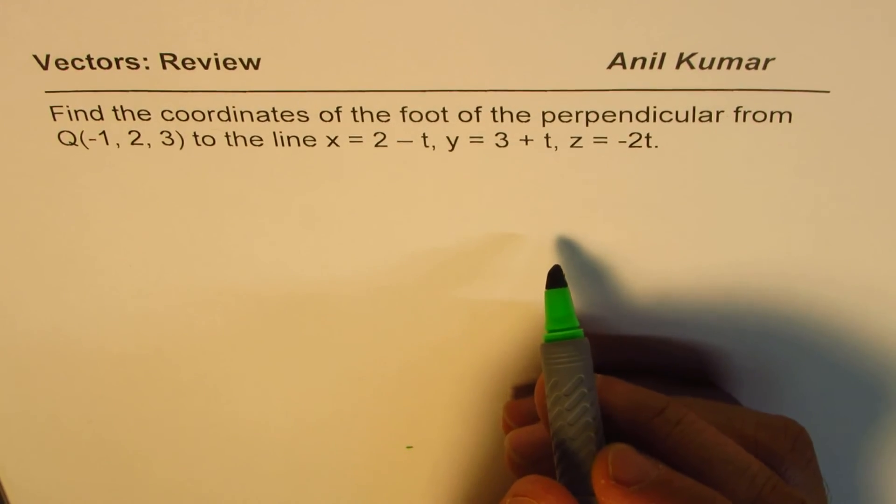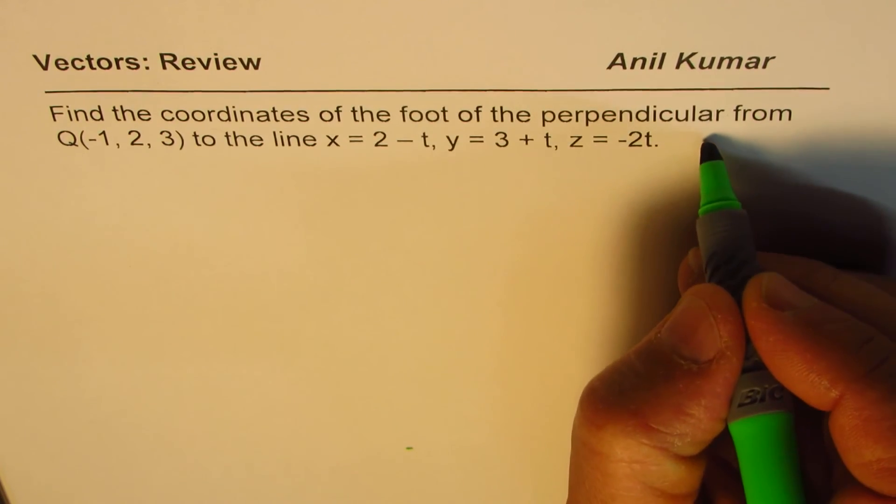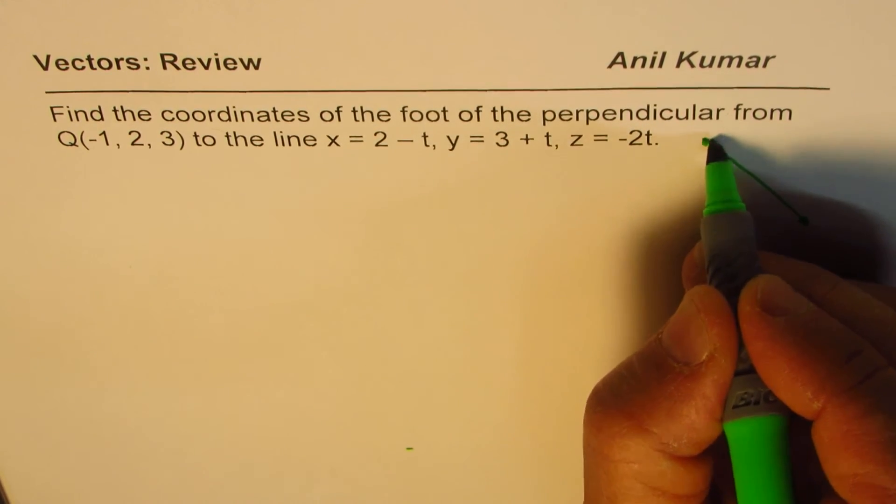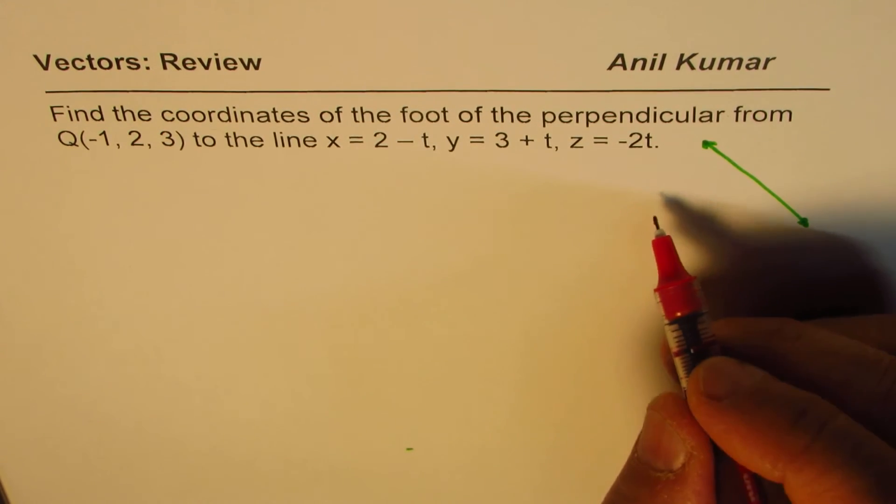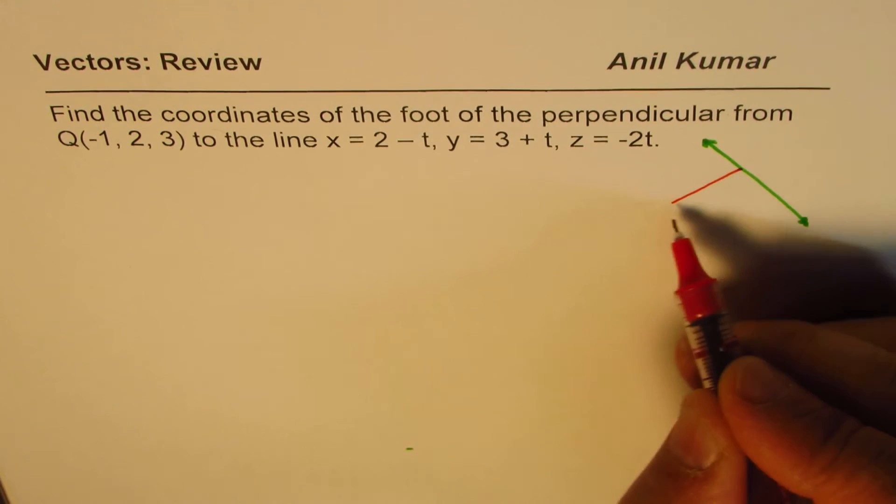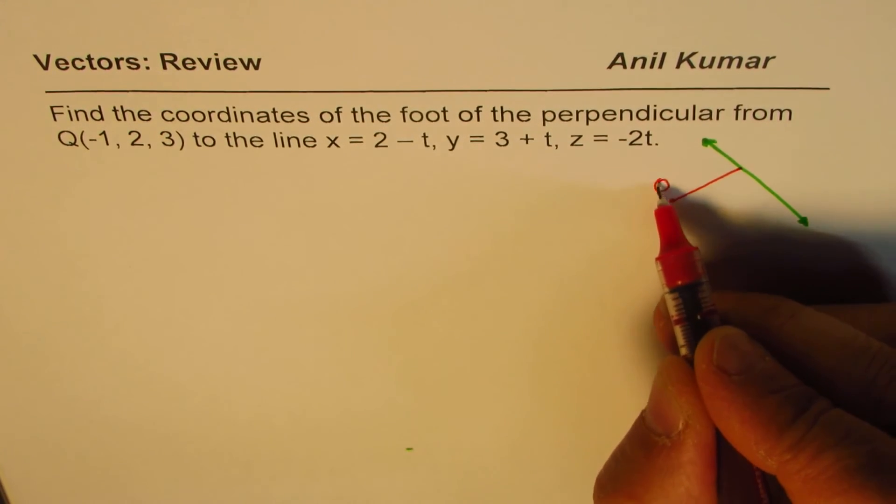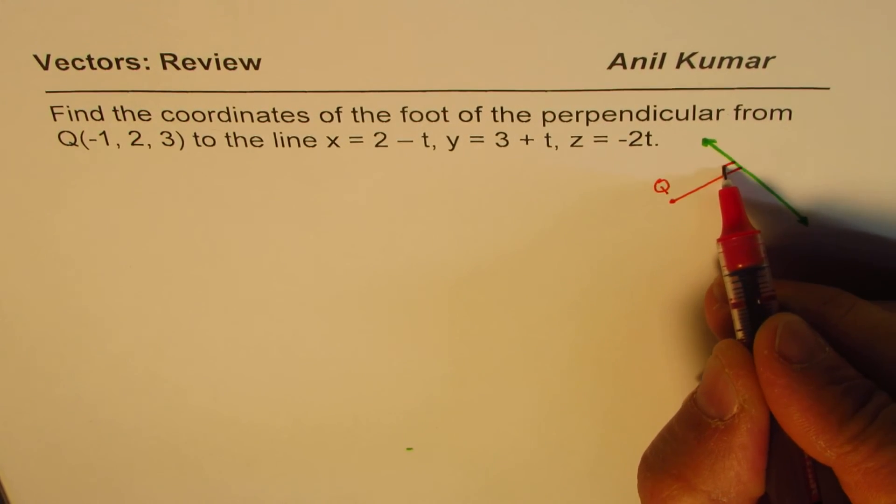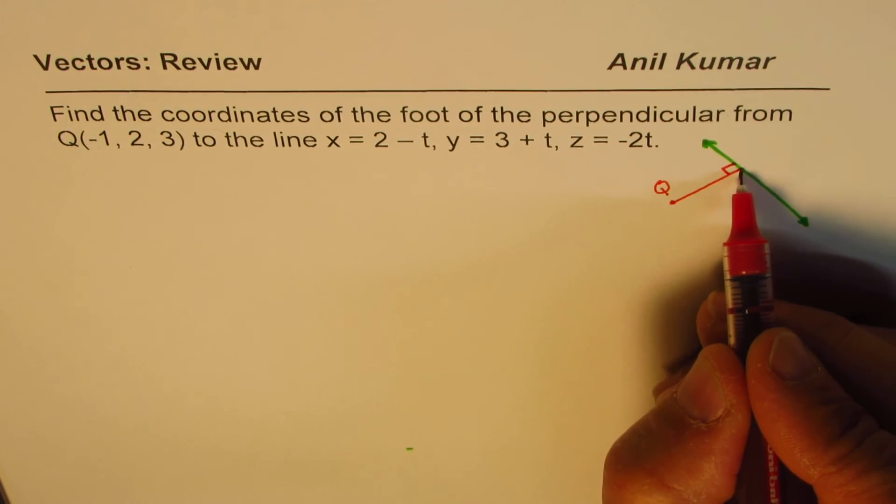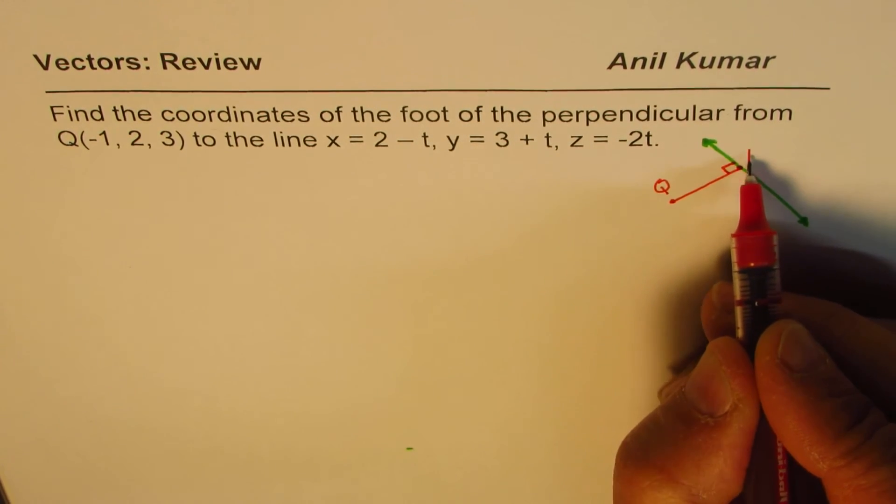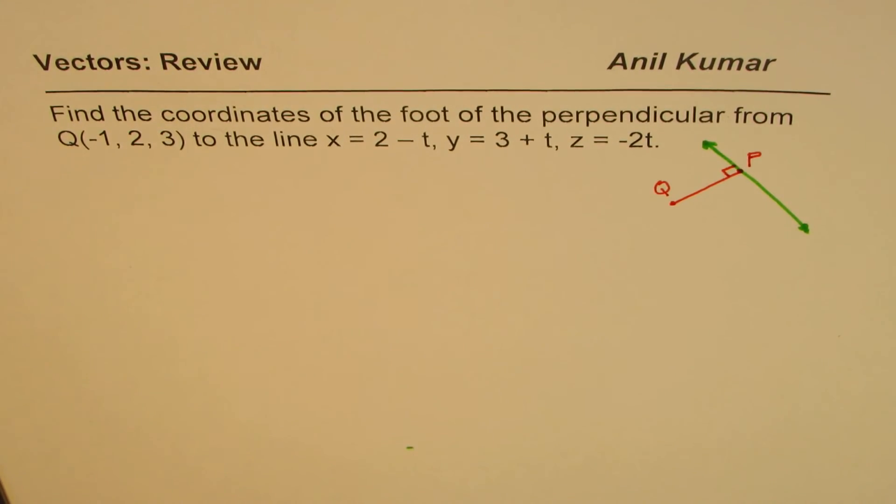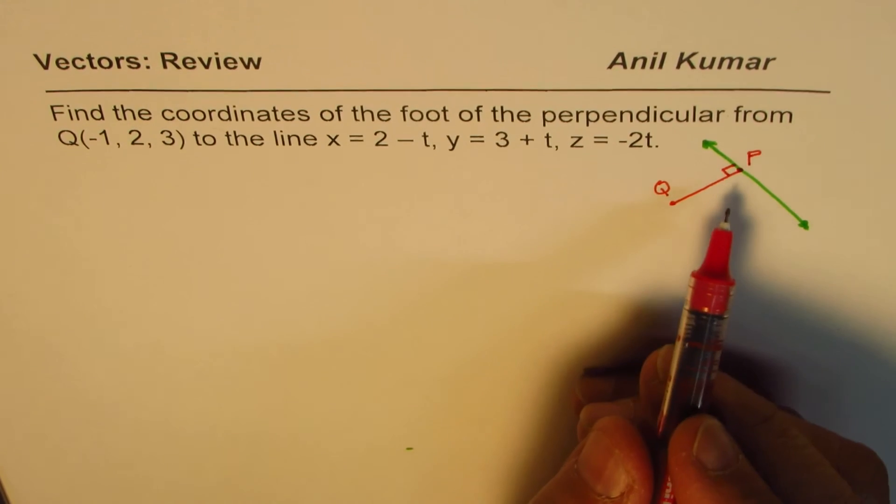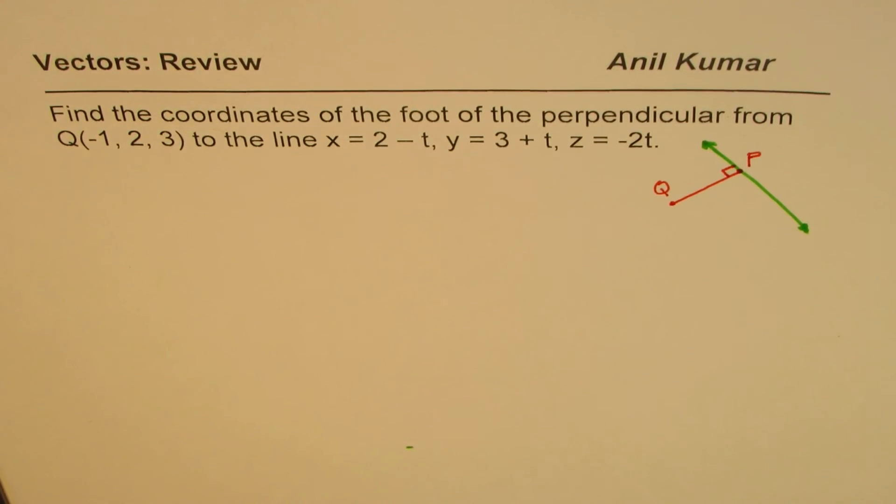Now foot of the perpendicular really means that, let's say we have a line kind of like this, and some external point Q, then that is the perpendicular from Q. So this is the point Q, the perpendicular is here. We want to find this point P on the given line and that is called the foot of the perpendicular. You can always pause the video, answer the question, and then look into my suggestions.